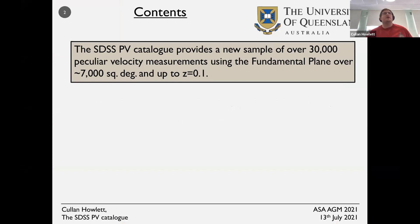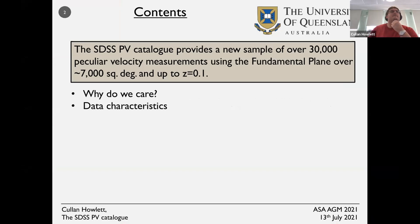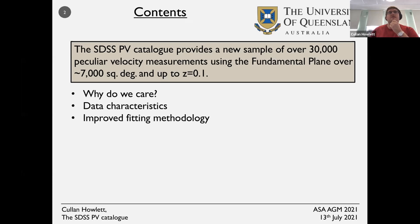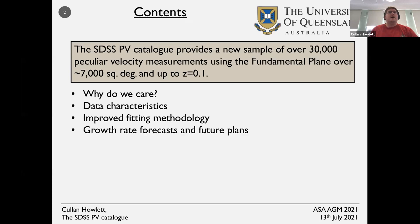It covers about 7,000 square degrees and goes all the way up to redshift 0.1. In this talk I'm going to start with why we should care, what the data characteristics are, what we've done to improve the fitting methodology, how we handle systematics to fit such a large dataset, and some quick forecasts of future plans.